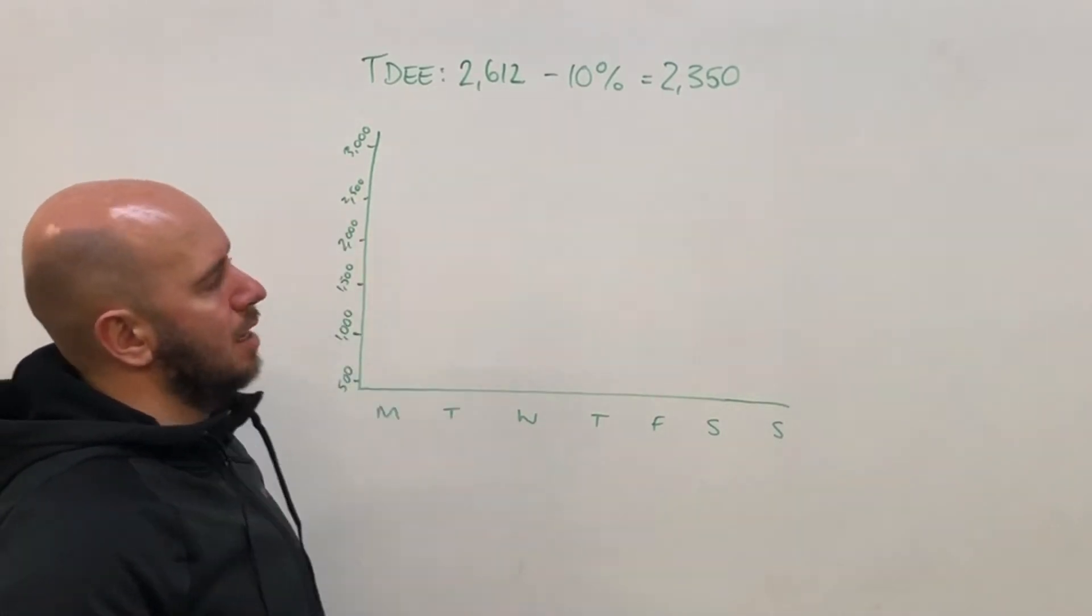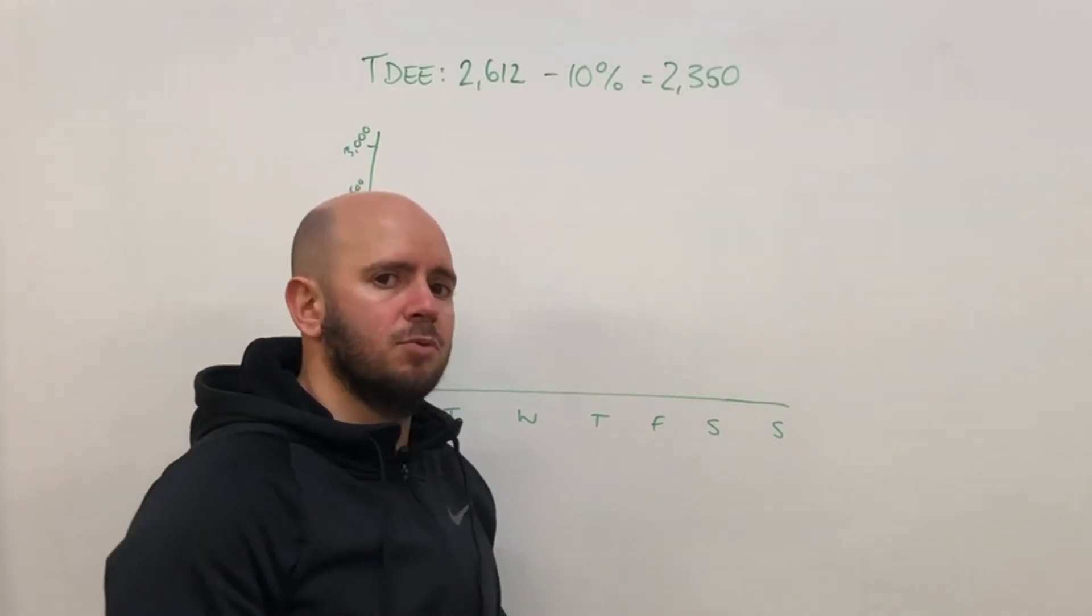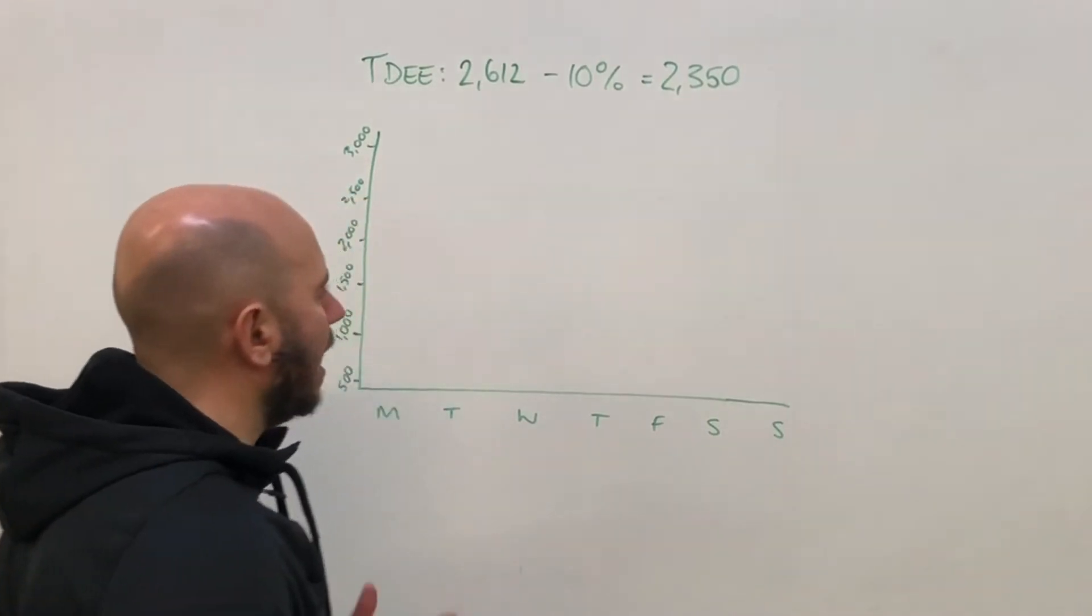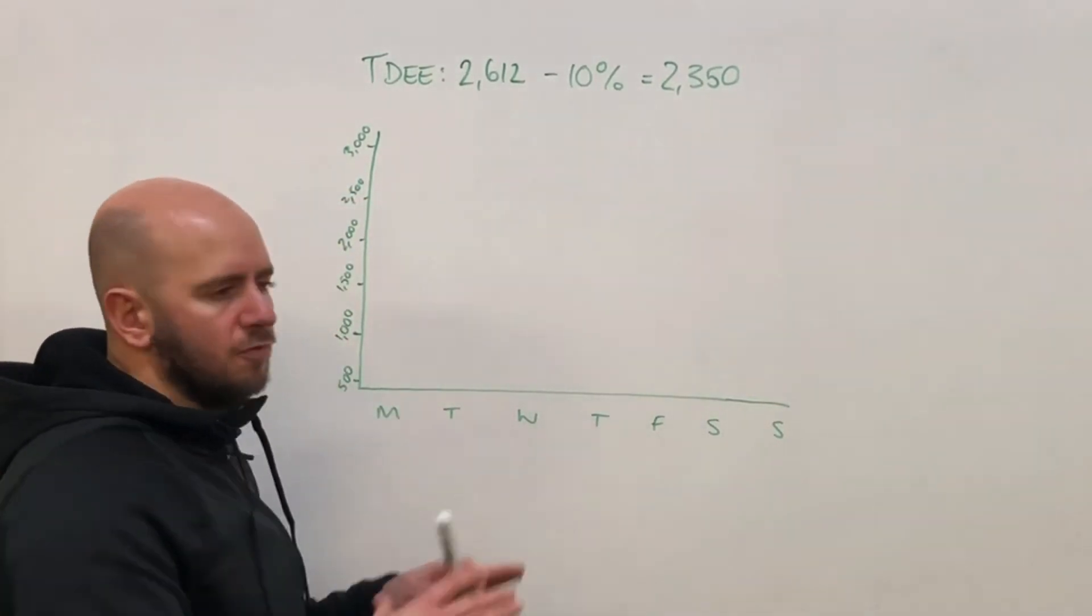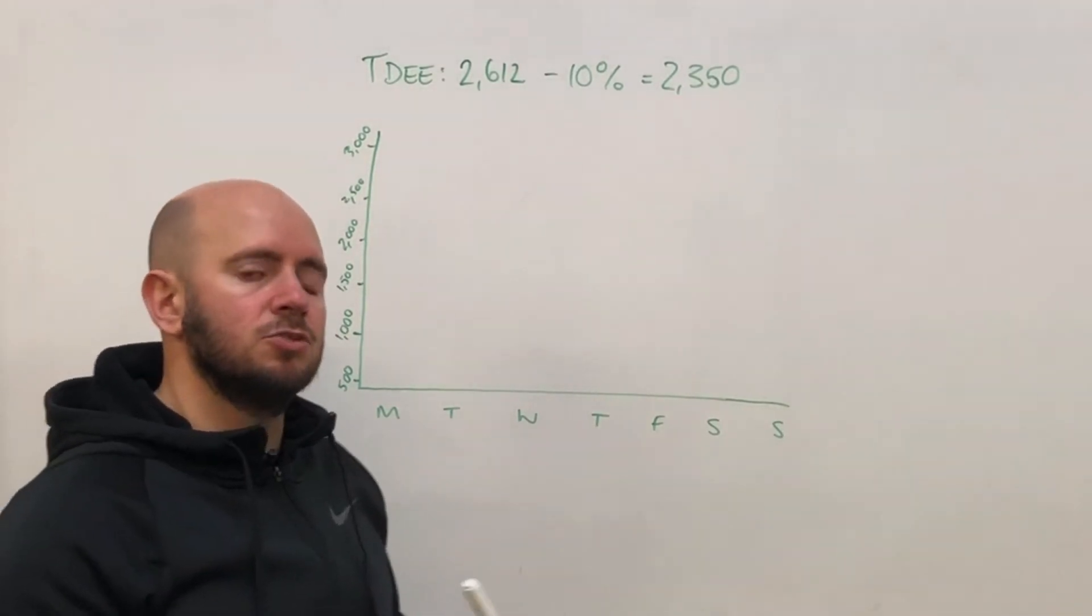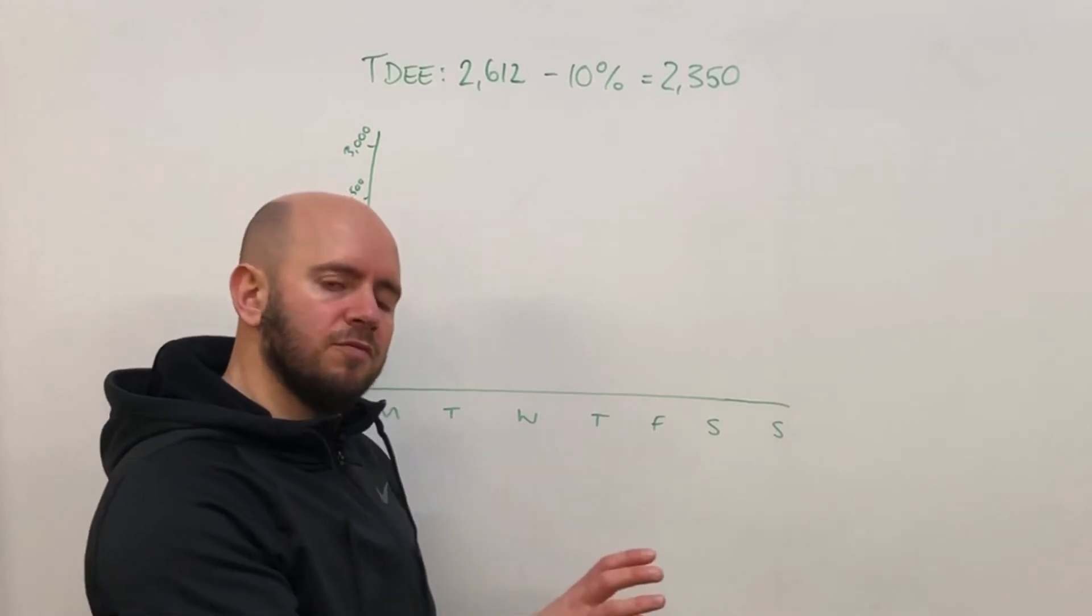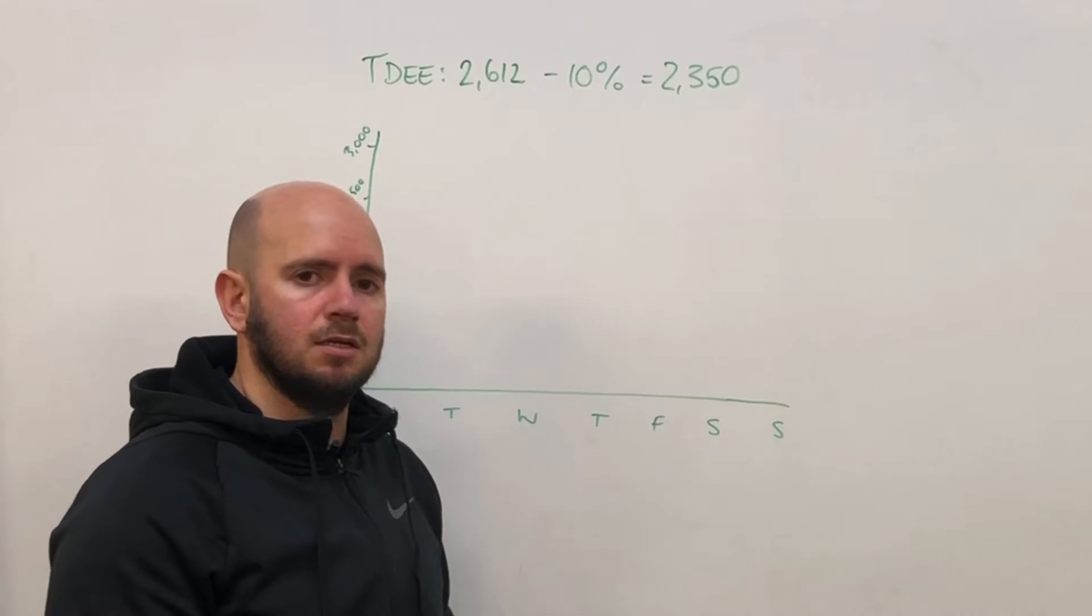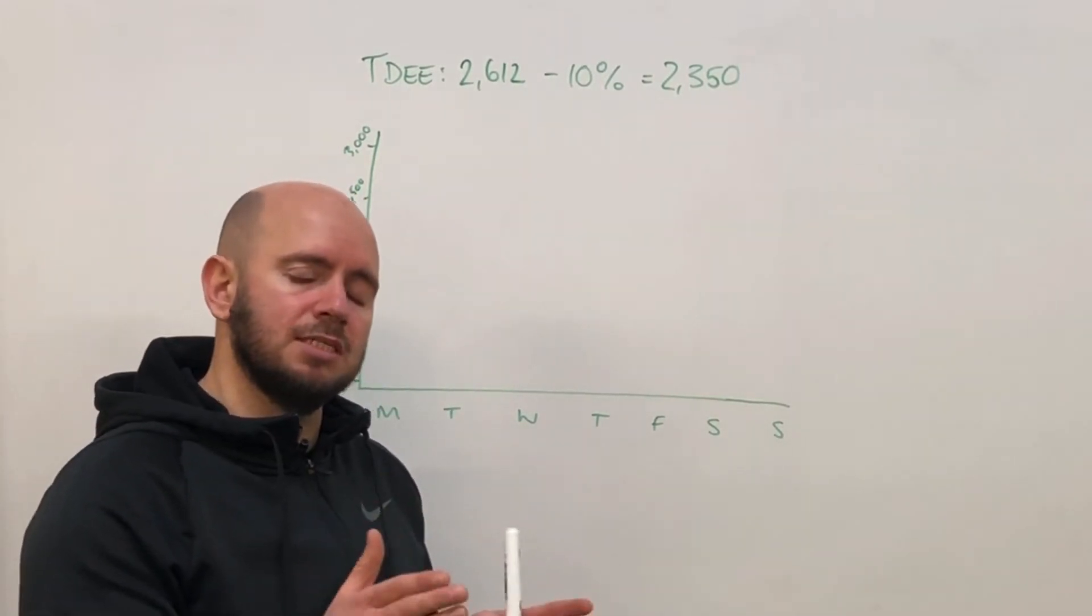But away from calories or as well as calories, the second most important factor is adequate protein. How do we calculate this? As a rule of thumb, you'll have different calculations and research, but if we work between 1.5 and 2.5 grams of protein per kilogram of body weight, that should give you an estimate of your protein target.